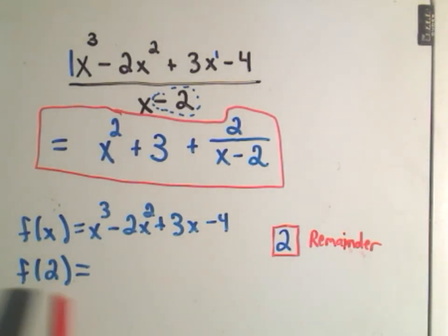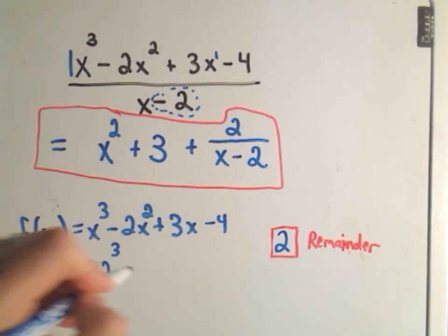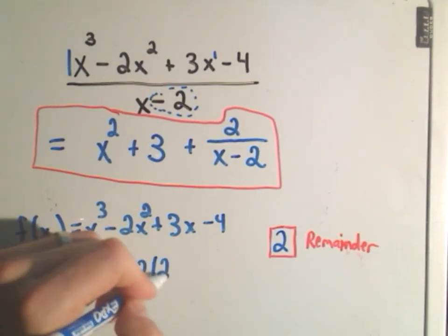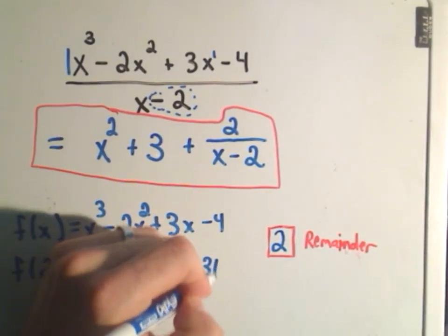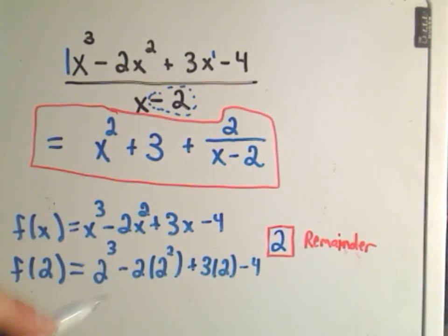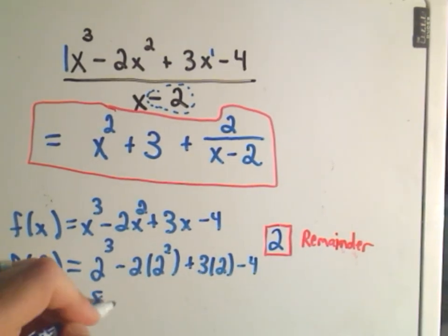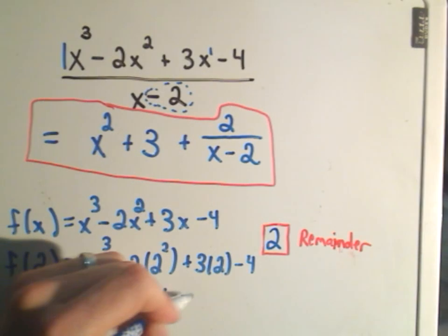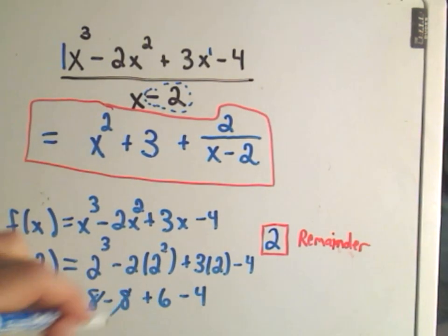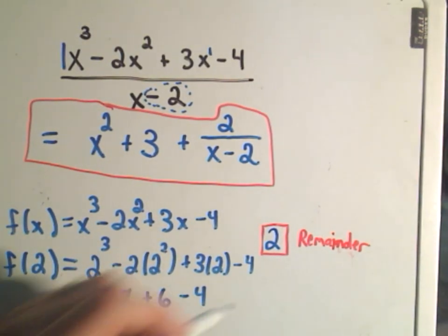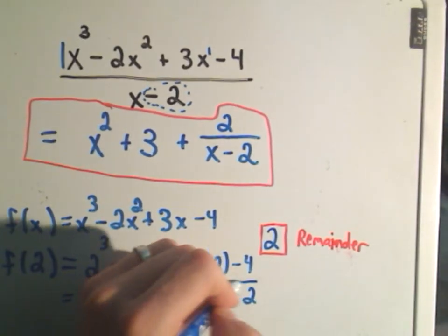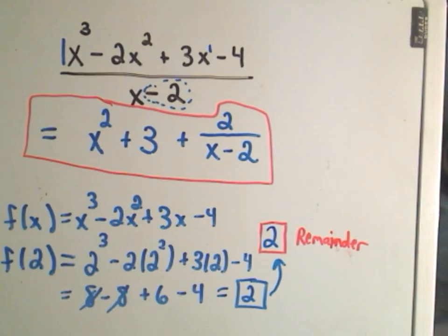So just a coincidence here that I plugged 2 in and got 2 out. But notice if I plug 2 in, I'll get 2 cubed minus 2 times 2 squared plus 3 times 2 minus 4. So this is 8 minus 8 plus 6 minus 4. Well, the 8 and the 8 cancel out. Positive 6 minus 4 is positive 2.